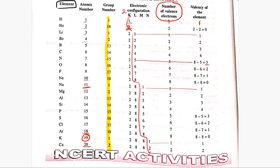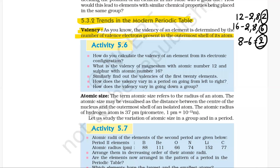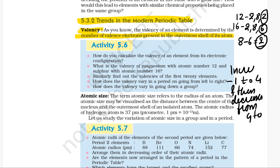So, if we observe the valency: it goes 1, then 0, then 1, 2, 3, 4, then 3, 2, 1, 0, then 1, 2, 3, 4, then 3, 2, 1, 0, then 1, 2. So in a period, the valency increases from 1 to 4 and then decreases from 4 to 0. How does valency vary in a period from left to right? In a period, the valency increases from 1 to 4 and then decreases from 4 to 0.